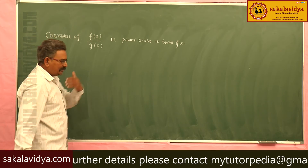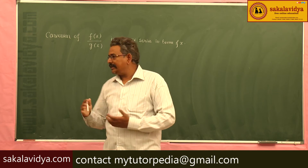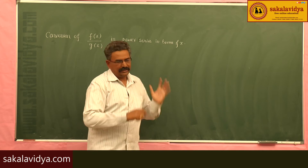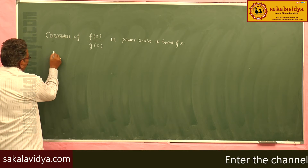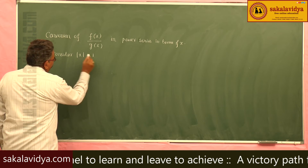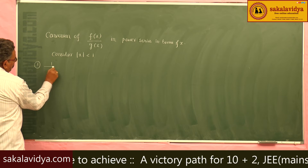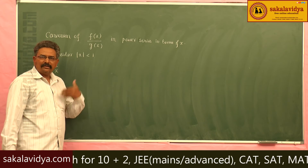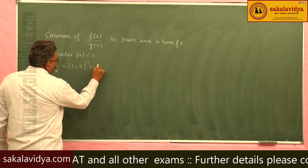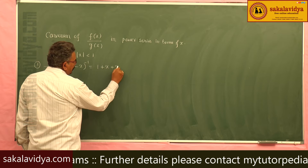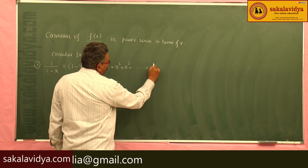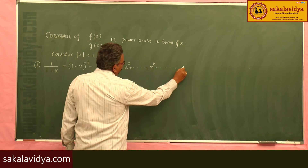In order to express and expand as a power series in terms of x, we should be familiar with these formulae. Consider mod x is less than 1. The first expansion is 1/(1-x), which equals (1-x) to the power of minus 1, equals 1 + x + x² + x³ + ... + x^k + ... up to infinity.